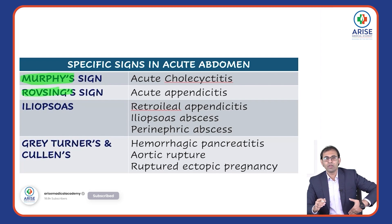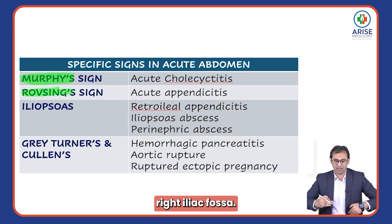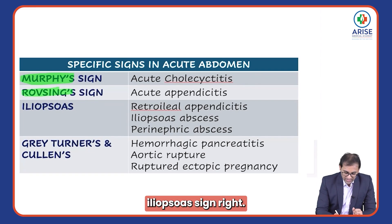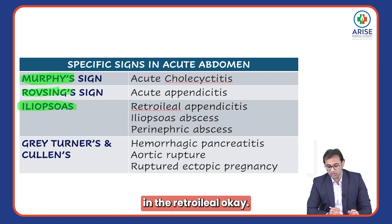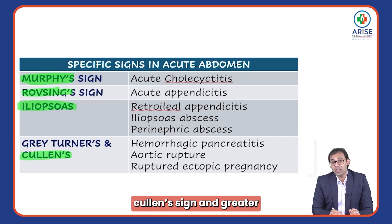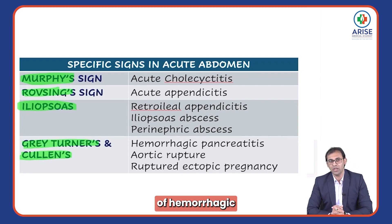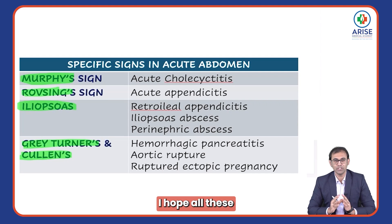In the same manner, Rovsing's sign: if you palpate over the left iliac fossa, there will be pain over the right iliac fossa — this is seen in acute appendicitis. The iliopsoas sign is also seen in a case of appendicitis, especially retro-ileal appendicitis. We also just learned about Cullen's sign and Grey Turner's sign, especially in hemorrhagic pancreatitis.